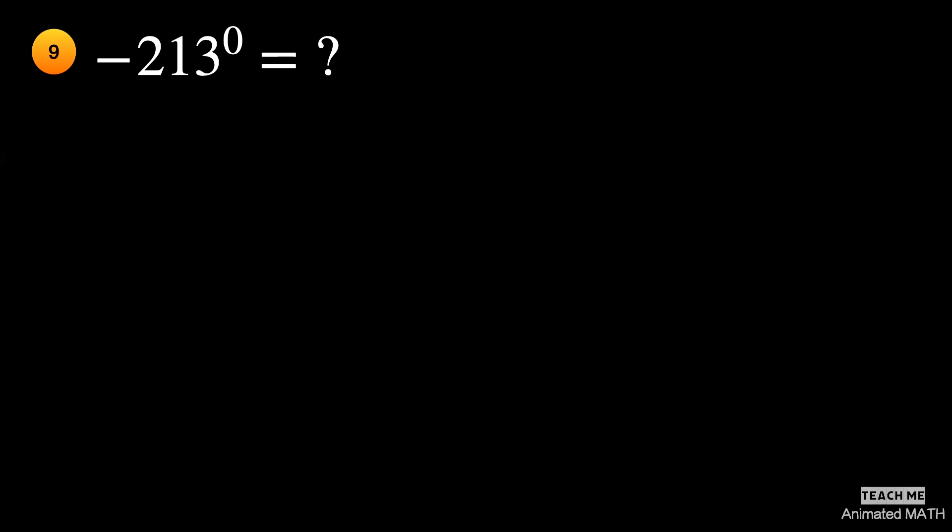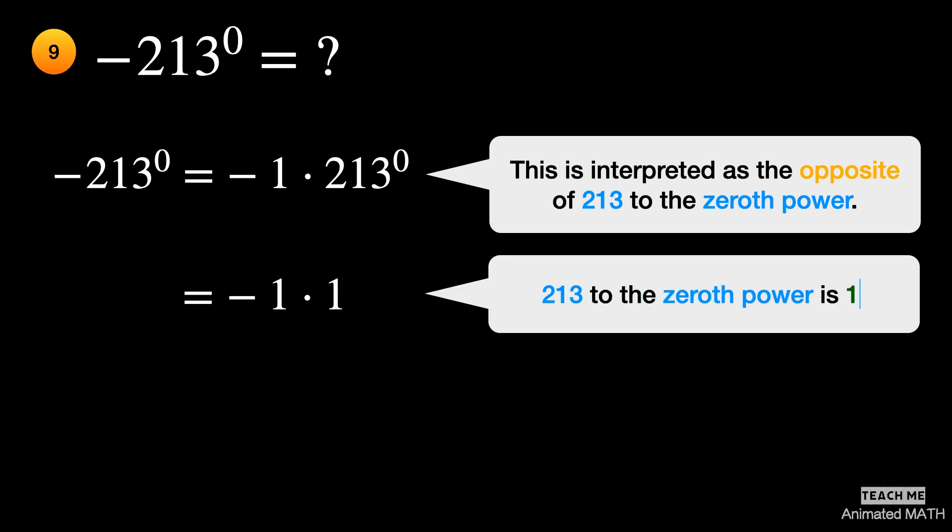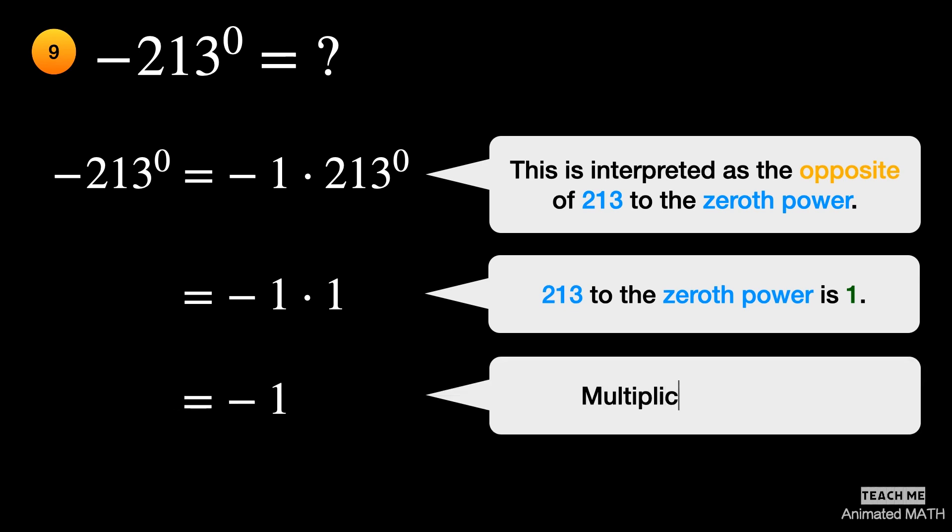Don't be intimidated by this big number, similar to an earlier problem we solved. The base for the exponent of zero is 213, not negative 213. So, 213 to the zeroth power is 1. And the product of negative 1 and 1 is equal to negative 1.